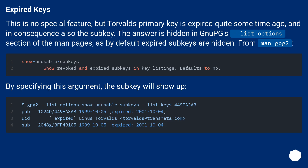Expired keys. This is no special feature — Torvalds' primary key expired quite some time ago, and in consequence also the subkey. The answer is hidden in the list-options section of the man pages, as by default expired subkeys are hidden.